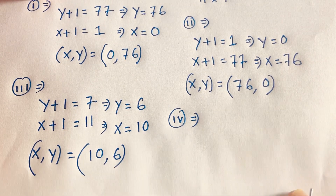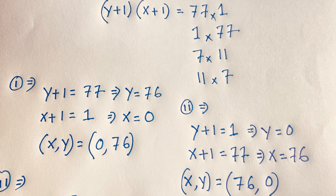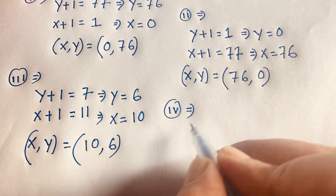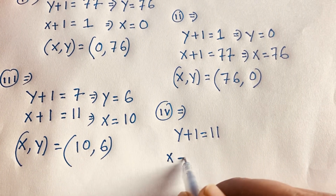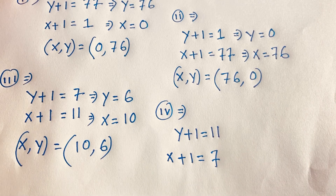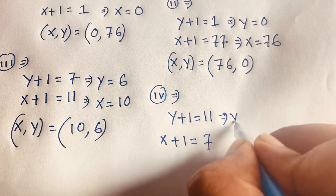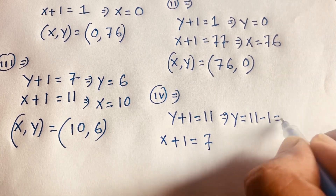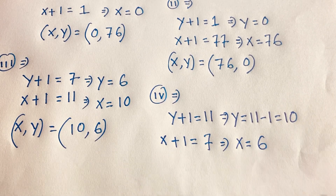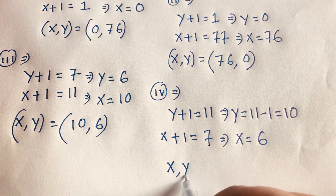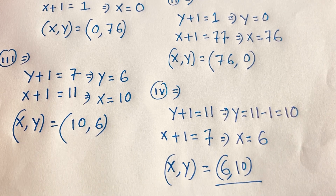Case 4: y plus 1 equals 11 and x plus 1 equals 7. So y equals 11 minus 1 equals 10, and x equals 7 minus 1 equals 6. So our final answer for this case is x = 6, y = 10.